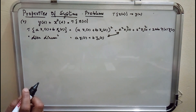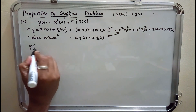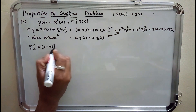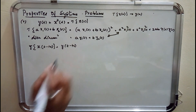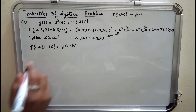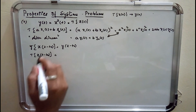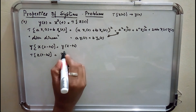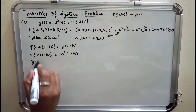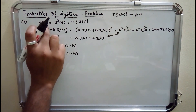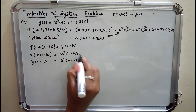Coming to the time invariance property: if there is a shift in the input, there should be a corresponding shift in the output. Taking the left-hand side: transformation on x(t − t₀) gives x²(t − t₀). On the right-hand side: y(t − t₀) means substituting t by t − t₀, giving x²(t − t₀). These two are the same.